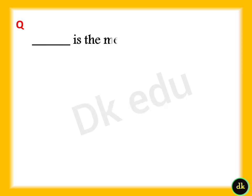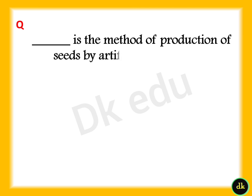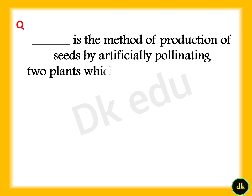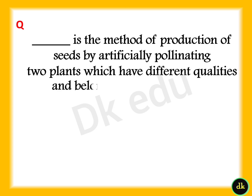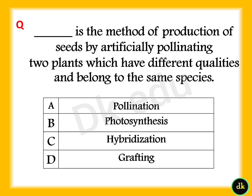Dash is the method of production of seeds by artificially pollinating two plants which have different qualities and belong to the same species. Answer: Option C, Hybridization.